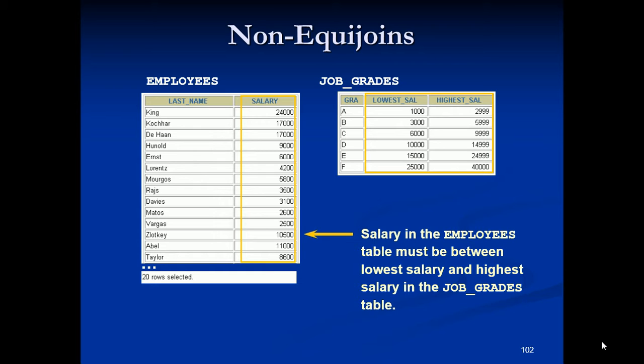The relationship between the employees table and the job grades table has an example of a non-equijoint. In this slide you can see there are two tables, an employees table and a job grades table where we don't have an equality operator as such between the two tables.